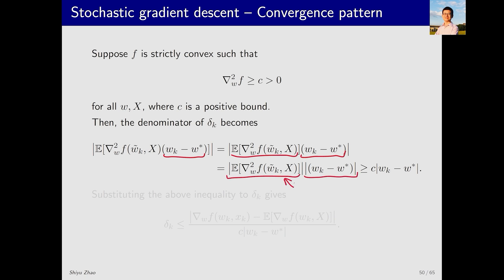The first term is greater than or equal to c, so it is greater than or equal to c times |w_k - w*|. Substituting this fact into the relative error gives that delta_k is less than or equal to this value. The numerator remains unchanged, but the denominator becomes c times the absolute value of w_k - w*. This equation might seem complex, but it is actually quite simple.